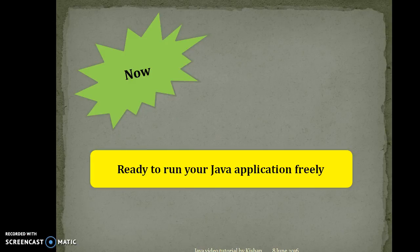That's all for this video tutorial. Once you set both JAVA_HOME and Java PATH, you can run your Java application from any directory of your operating system. I'm going to upload more video tutorials related to Java — please subscribe to my YouTube channel to get updates on my latest uploads. See you in the next tutorial. Happy learning, bye!